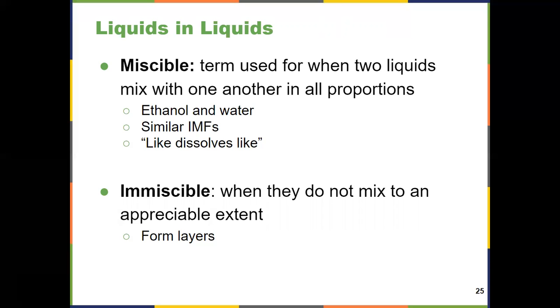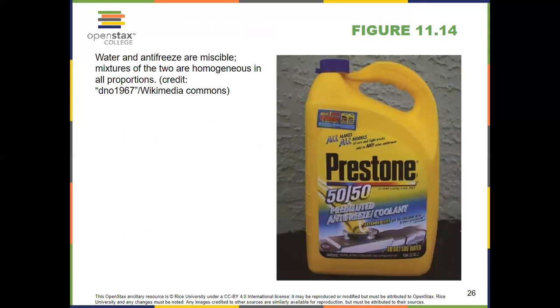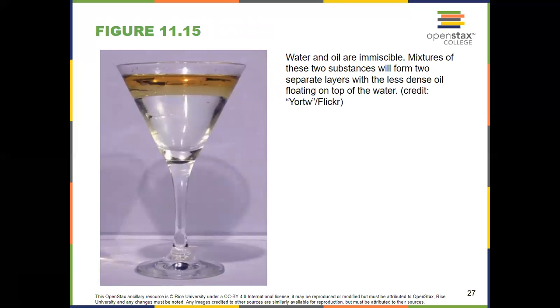Otherwise, vodka, for example, would settle out, which it does not. If they don't mix together, they are called immiscible and they form layers with one another. Oil and water are immiscible. So typically, if you have a solution between liquids like antifreeze, you want them to be miscible. And this is what they look like. If they're not, they clearly form layers. So that's really all you need to know about two liquids coming together: miscible and immiscible.